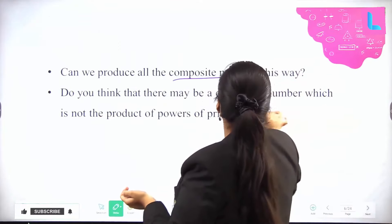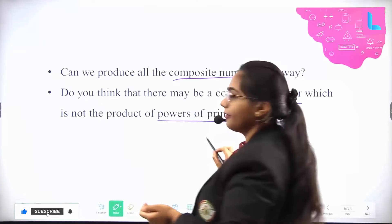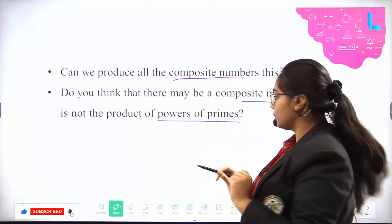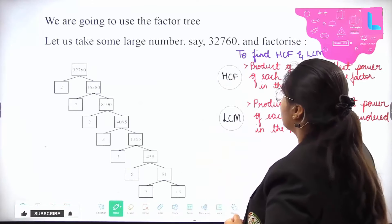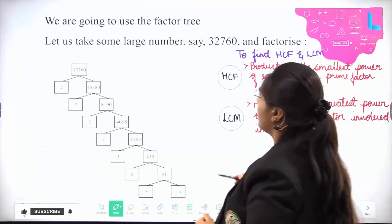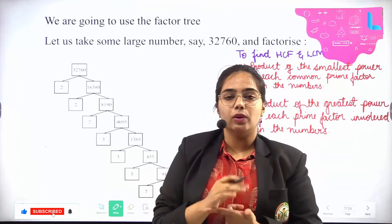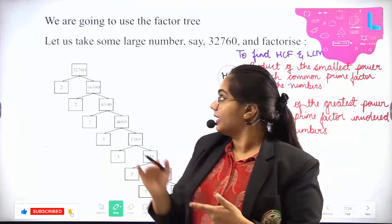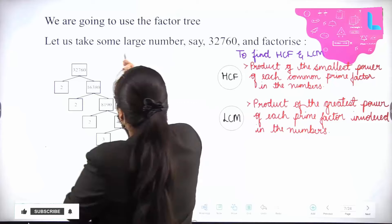Composite numbers are represented using the powers of prime numbers only — that is what this slide says. Now, next is the factor tree. What is a factor tree? We will solve it with an example.